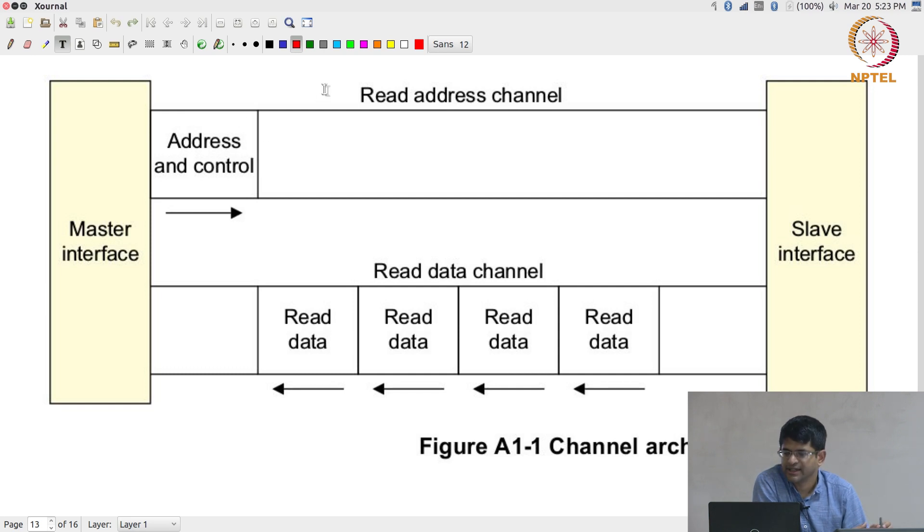In the AXI bus the read address channel essentially says that the master interface just gives out address and control. It is just given once, I do not have to give addresses for every single read value. The slave will then respond with a series of read data. One way to understand this is effectively every transaction now is considered a burst. You can change the length of the burst to anything you want, within certain limits, but every transaction will just have one address and control signal going out corresponding to it. You can think of that as the address channel which is used to communicate that information to the slave, and the slave then responds on the read data channel with possibly multiple data coming back.